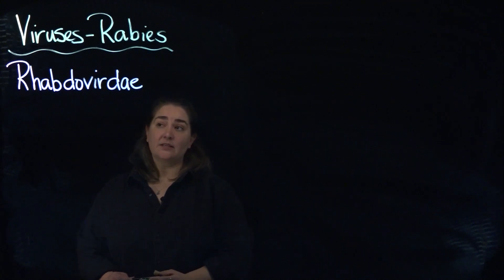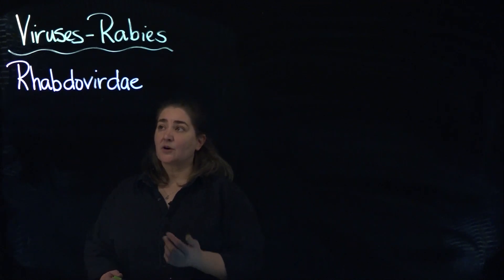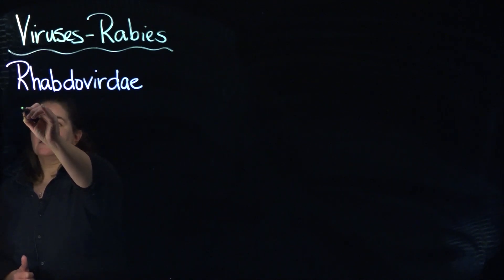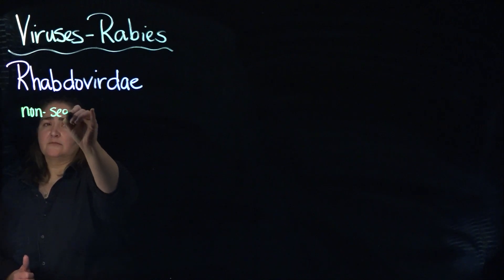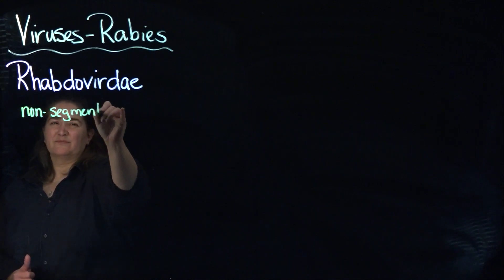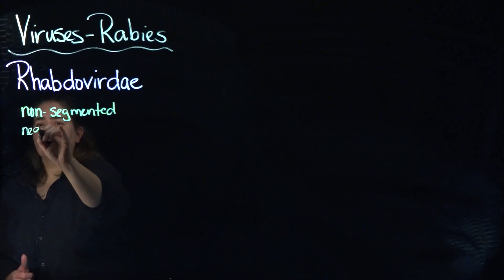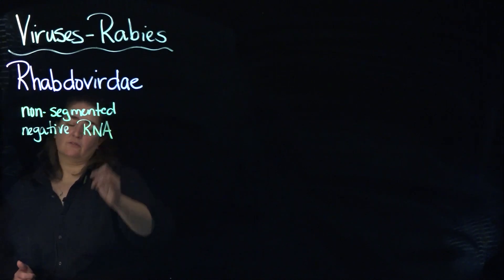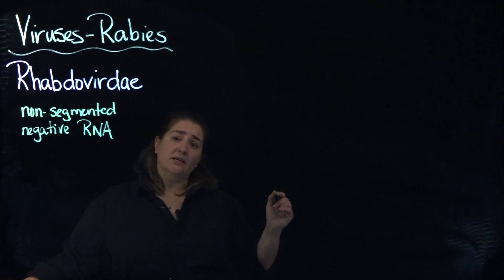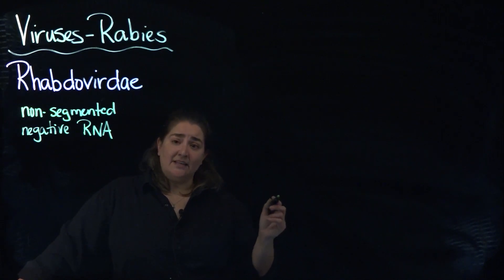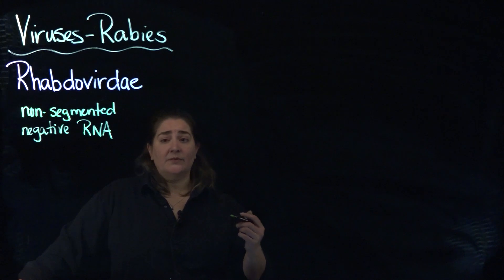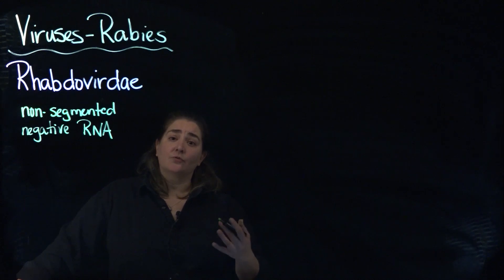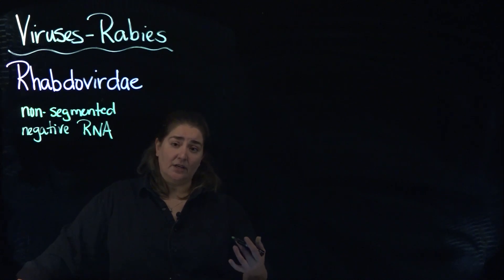The rabies virus is part of the rhabdoviridae family of viruses. It is a non-segmented negative strand RNA virus. You've got one strand of RNA, it's not segmented, it's the negative strand, so when it gets into the cell — whether it be an animal or whether it be human — it needs to be converted in order for that virus to replicate inside of that eukaryotic cell.